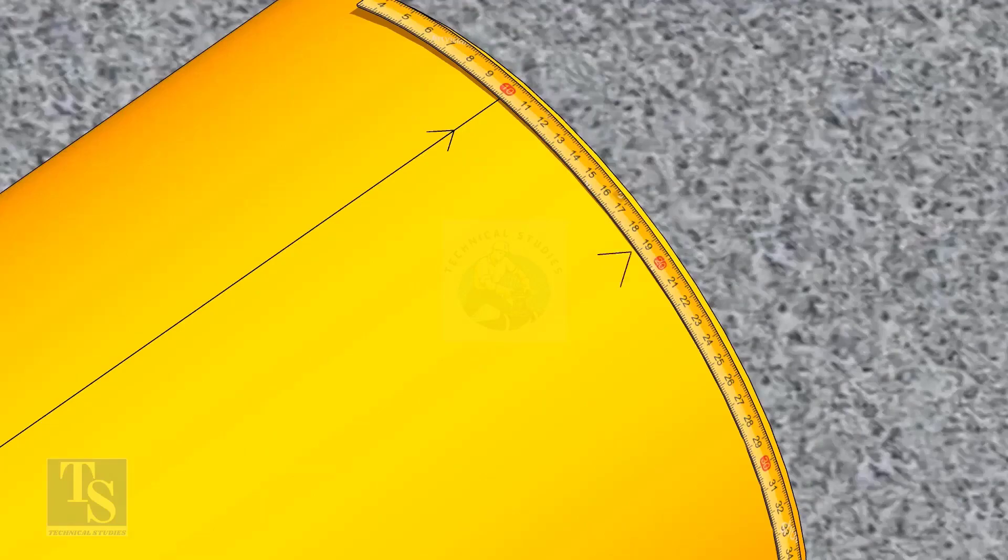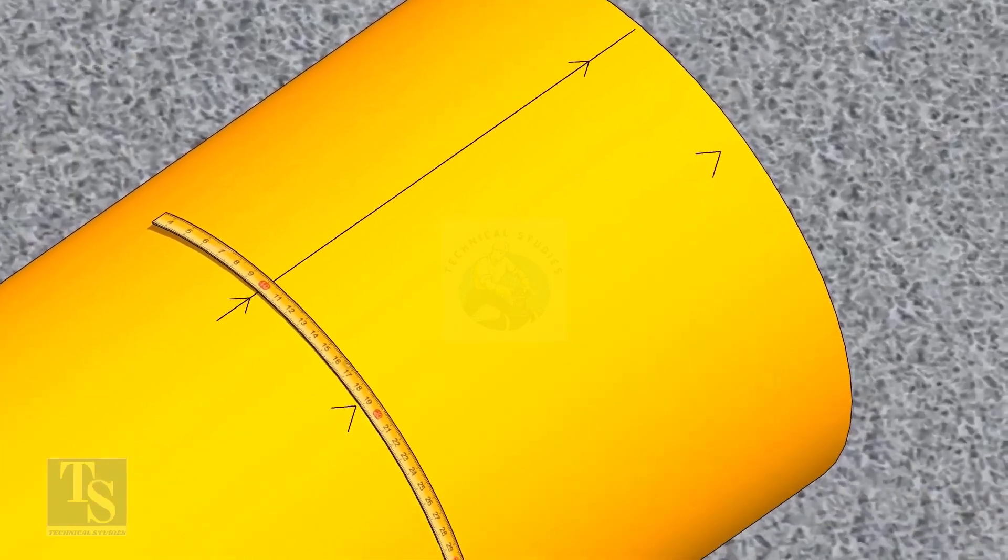Since we are rotating the flange 25 degrees anticlockwise, mark 88.5mm anticlockwise on the pipe, as shown.